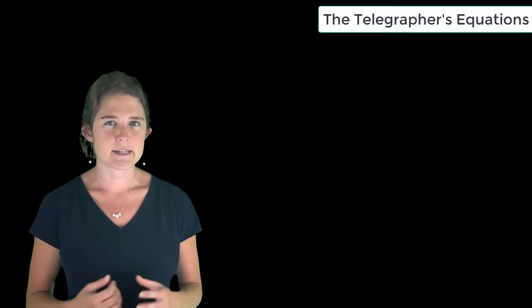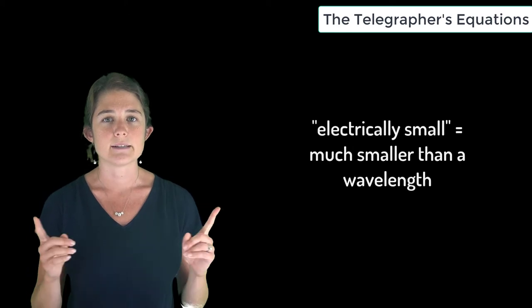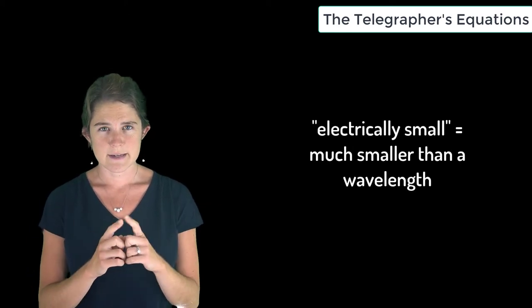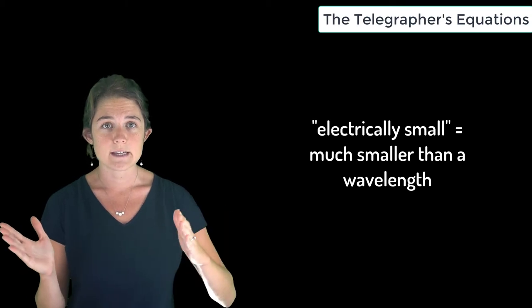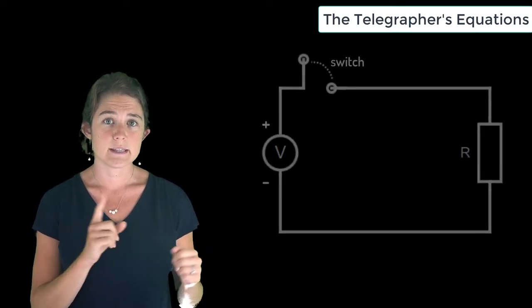Introductory circuit theory generally makes the assumption that the system being analyzed is electrically small - that is, that all the elements in the system are much smaller than the wavelength of the signal propagating through it.